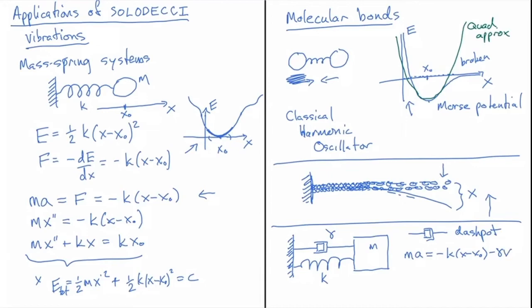And so when I translate this and simplify it down, I get mẍ + γẋ, when I bring that v term over to the left side, plus kx equals kx₀. And because kx₀ is a constant...